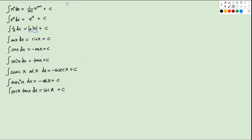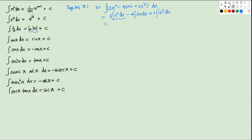The first exercise is from page 148, question 1. We'll do parts B, D, F, H, and J. Question B is the integral of 5eˣ − 4sinx + 2x³ dx. We separate this into three terms and take out the constant coefficients. So we have 5eˣ dx, minus 4 sinx dx, and plus 2 x³ dx. For eˣ we get eˣ, so we have 5eˣ. For sinx the integral is negative cosx, so we get plus 4cosx. And for x³ we get x⁴/4, so the result is 5eˣ + 4cosx + x⁴/2 + C.